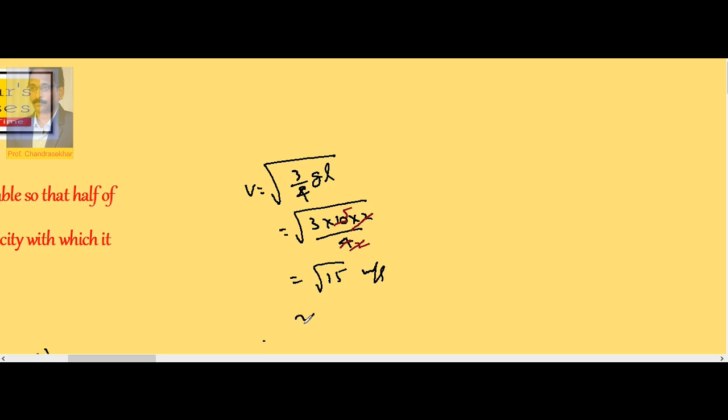Or approximately 4 meter per second, because 16 under root is 4. So velocity with which the chain moves down or falls down is 4 meter per second.